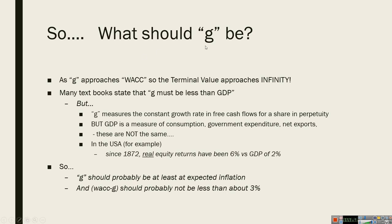So what should G be? This is the key question. As G approaches WACC, the denominator becomes zero and the terminal value — especially using a perpetuity calculation where you divide by WACC minus G — approaches infinity, which can be a problem. Many textbooks state that G must be less than GDP. It sounds logical, but if you think hard about this, it may not be true.